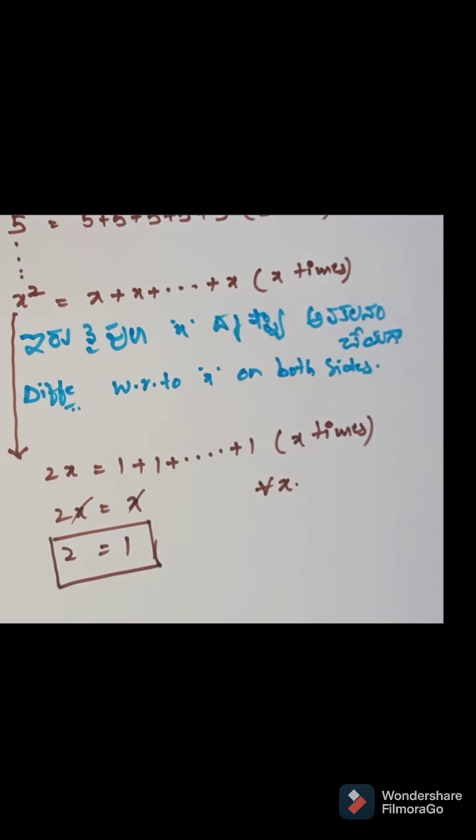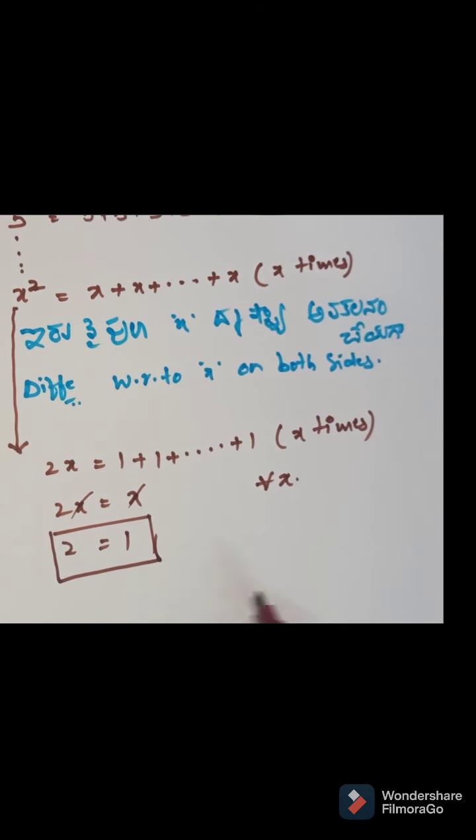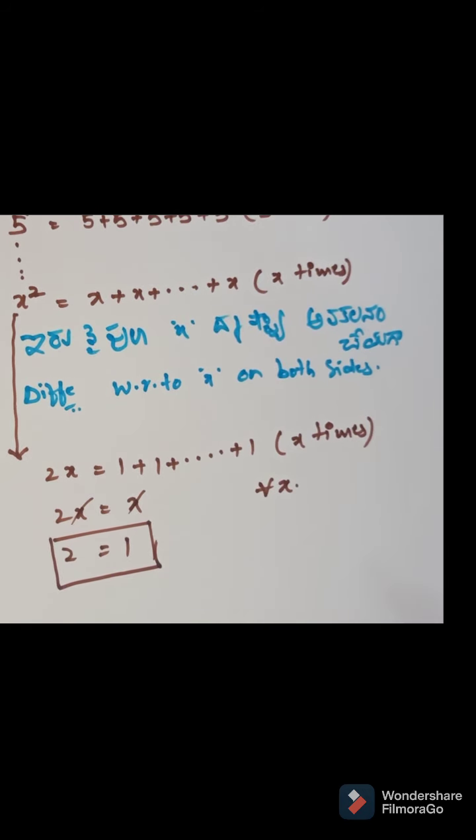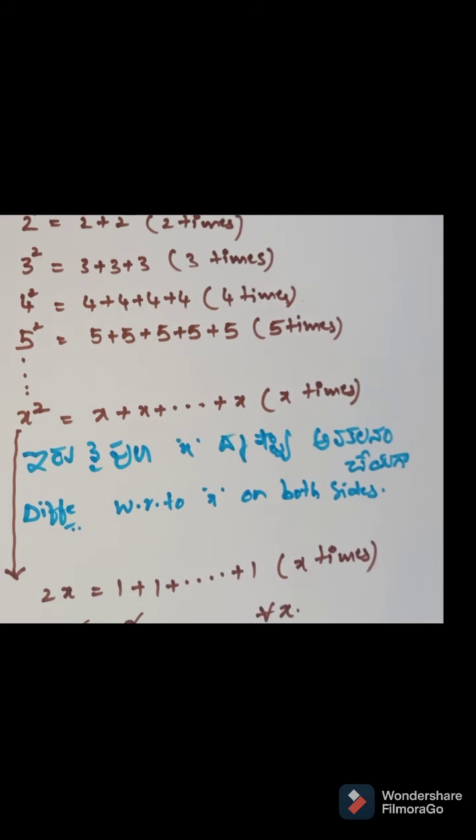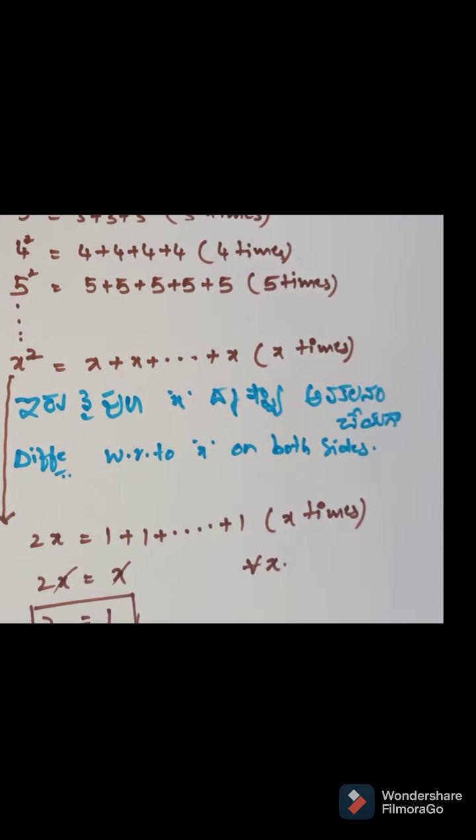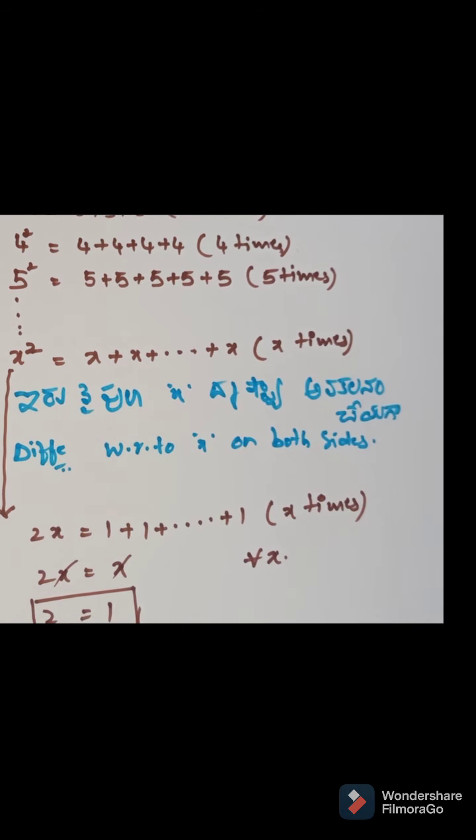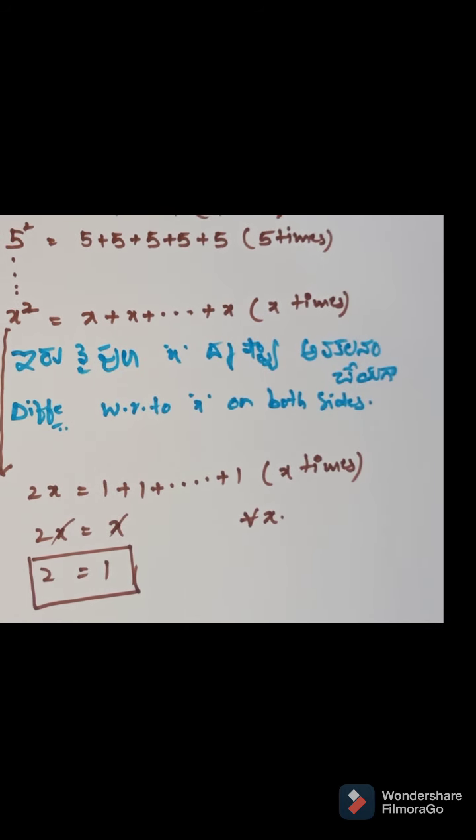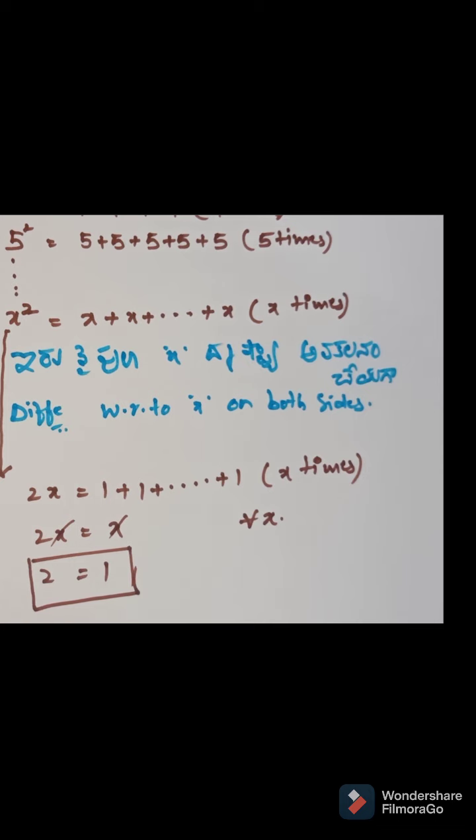In this case, 2 and 1 is equal to 1. But if you observe this proof, each and every step is logically correct. So this is my challenge. Where there is a mistake in this proof? Where there is a false proof?